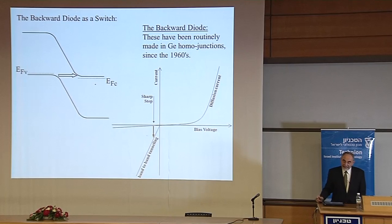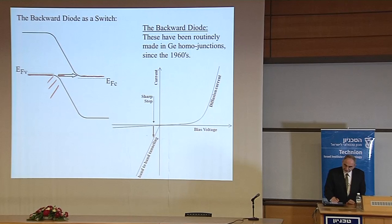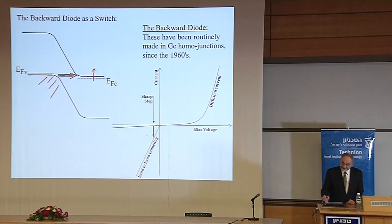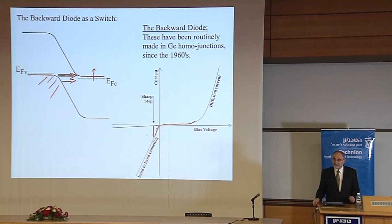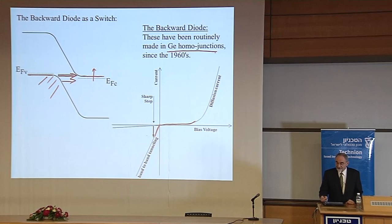The backward diode, invented after the Esaki diode, has lighter doping so that at zero bias the conduction and valence bands are perfectly aligned. In reverse bias you can tunnel from the filled valence band to the empty conduction band. In forward bias they get misaligned and it behaves like an ordinary diode. The switching occurs right at zero volts. Invented in the 1960s, normally made from germanium homojunctions, it never worked very well, but in principle it should perform much better.